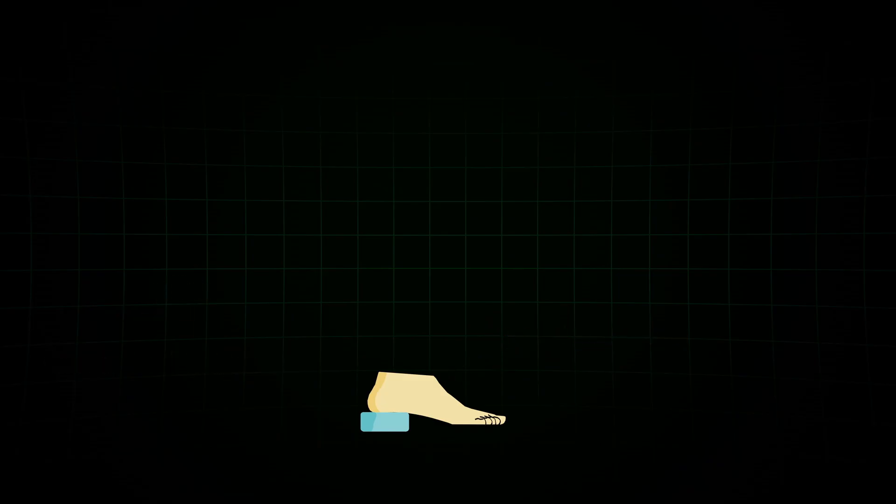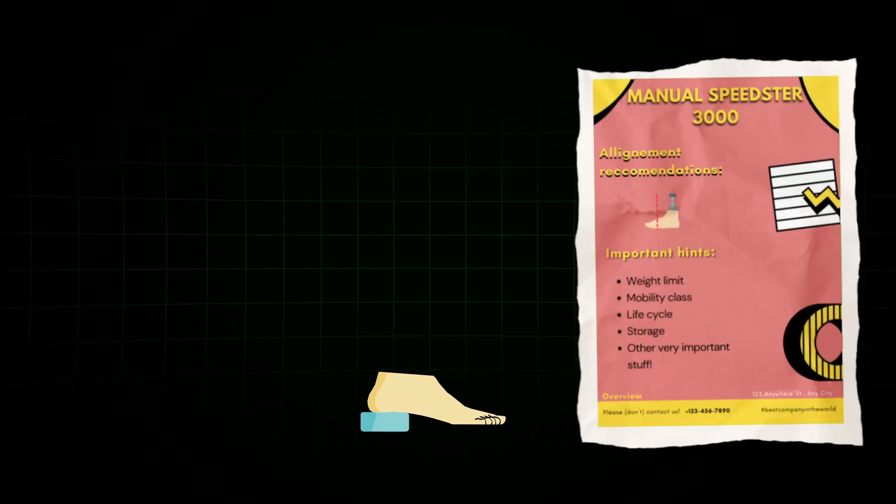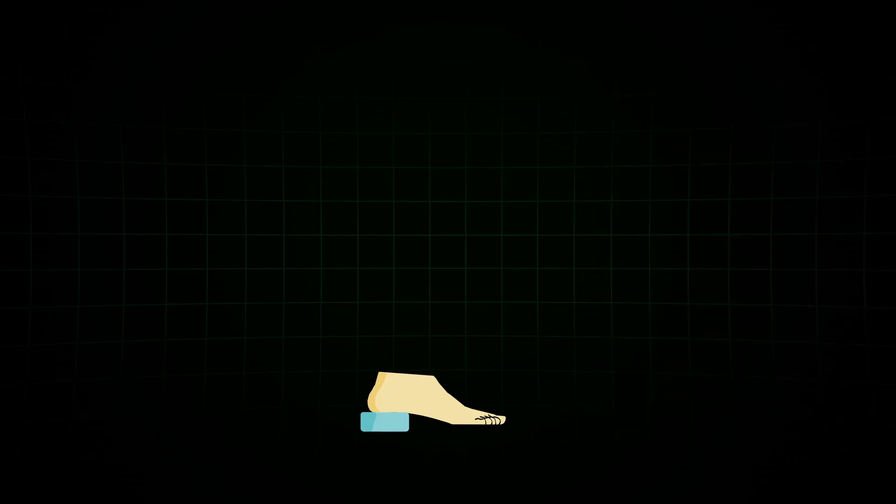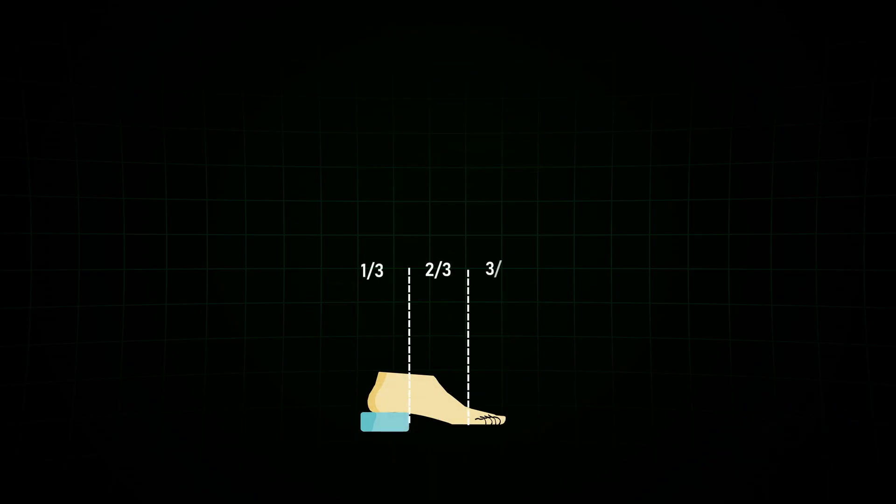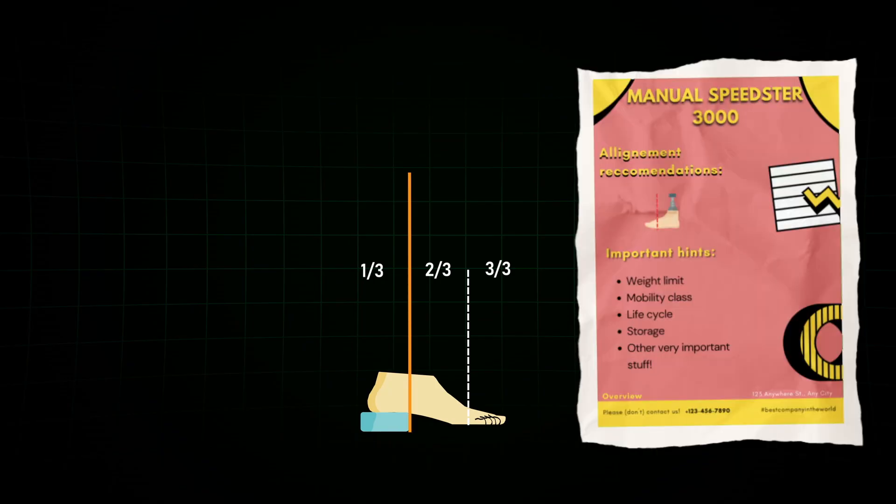Let's start in the sagittal plane. The rule here specifically depends on the manufacturer. So look at the manual. The most used rules are to find the middle of the foot length and let the reference line fall three centimeters behind, or split the foot into thirds and let the line fall between the dorsal and the middle third. So look at your manual.